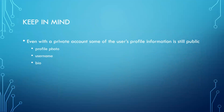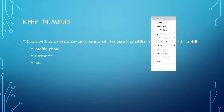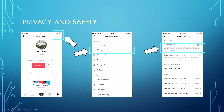Keep in mind, even with a private account, some of the user's profile information is still public — things like your profile photo, your username, and your bio. Over on the left, when you see my profile page, you see that my username for this account is Coach Sarah. There's a profile picture underneath that — some flowers with a little quote — and the tag handle. I never inputted a bio when I created the account, but that would be right underneath as well. So those three things will be available for any user on TikTok to see.